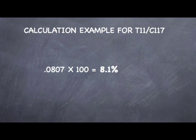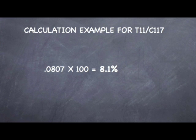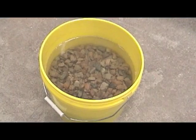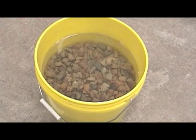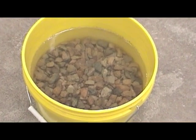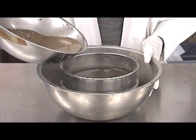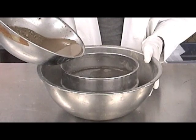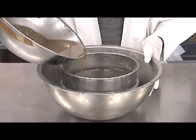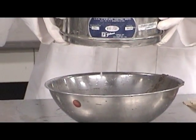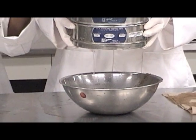Once again, if this number were greater than 10%, we would report to the nearest whole number. This concludes AASHTO T11 and ASTM C117, the standard method of test for determining materials finer than the 75 micron or number 200 sieve in mineral aggregates by washing.